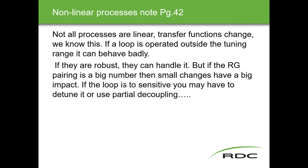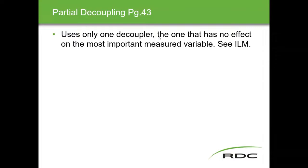If the loop is too sensitive, you have to go back to detuning strategies or use partial decoupling. Partial decoupling uses only one decoupler — the one that has no effect on the most important measured variable. For example, in a loop with a composition transmitter and a flow transmitter, composition is probably more important, so you use the decoupler that doesn't affect composition. That's almost like turning it into a ratio control situation.